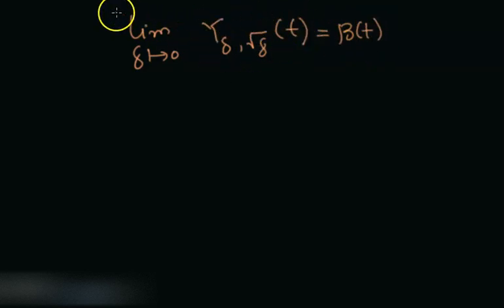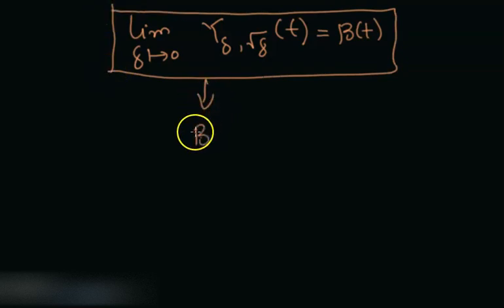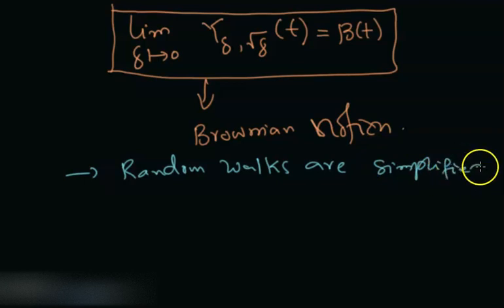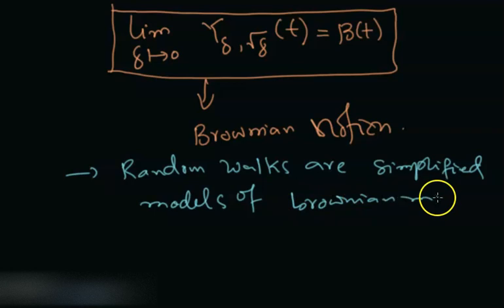And don't forget that this is coming out of the process that we defined previously. So this is an example of Brownian motion. You can say that random walks are simplified models of Brownian motion. Let's carry out further in the next discussion.